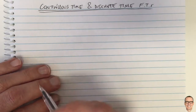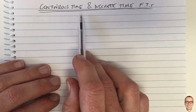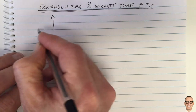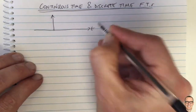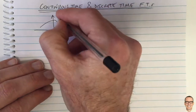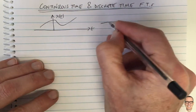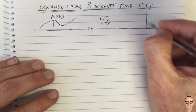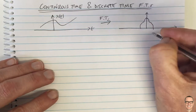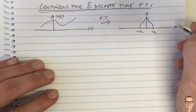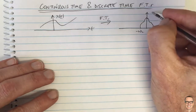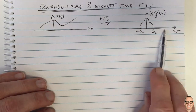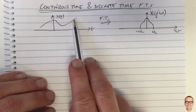Here we're going to discuss the relationship between the continuous time Fourier transform and the discrete time Fourier transform. Let's think of a continuous time signal x(t), and it has a Fourier transform. If it's a low-pass signal, it has a Fourier transform that looks like this, with a cut-off frequency of omega_c. We typically write capital X of j-omega. So this is the Fourier transform of a low-pass signal, and this is what the signal looks like.